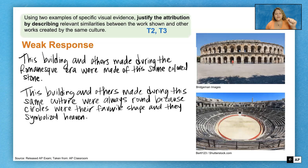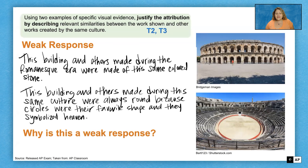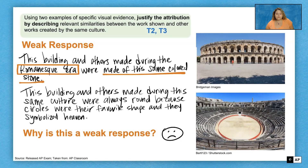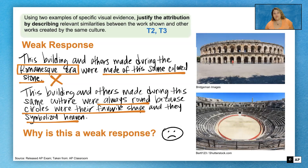Looking at T2 and T3 — using two examples of specific visual evidence to justify the attribution — here's a weak response: 'This building and others made during the Romanesque era were made of this same colored stone.' The wrong culture is mentioned, and there's no specificity about what color or type of stone. Another weak response: 'This building and others made during the same culture were always round because circles were their favorite shape and they symbolized heaven.' That's incorrect — not all buildings were round, and they weren't round to symbolize heaven; they were round because people needed to see what was happening in the center.